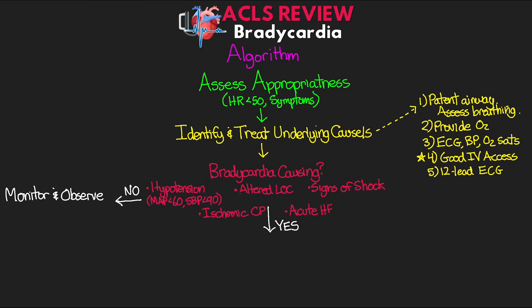Our very first intervention is going to be to administer atropine, and our dose here is 1mg IV push. The dose used to be 0.5mg, but this was updated in 2020 by the AHA — the new recommendation is 1mg, which can be repeated every 3-5 minutes for a maximum dose of 3mg (3 doses total). It's important to know that atropine works by increasing activation of both the SA and AV nodes. If your patient is in a third-degree heart block, this medication is going to be useless, and it will also be less effective with some second-degree blocks. Atropine can also have negative effects if the bradycardia results from an acute MI, because increasing the heart rate increases myocardial oxygen consumption.